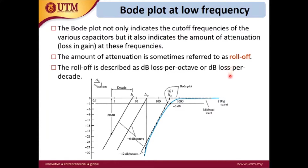Besides the cutoff frequency, we also have a term called roll-off. Roll-off is the amount of attenuation — meaning the loss in gain — at a given frequency. Roll-off indicates how fast the gain decreases over frequency. If the roll-off is high, the gain decreases rapidly; if the roll-off is low, the gain decreases gradually.